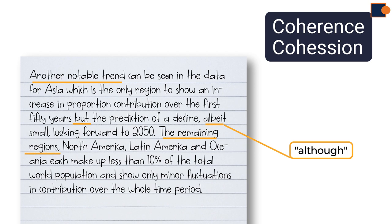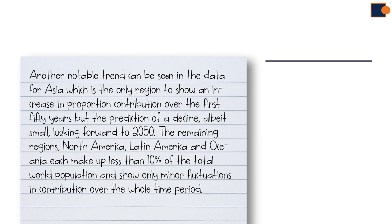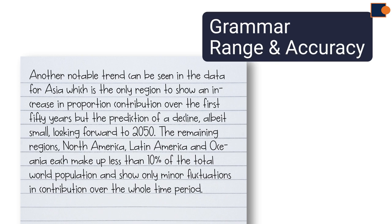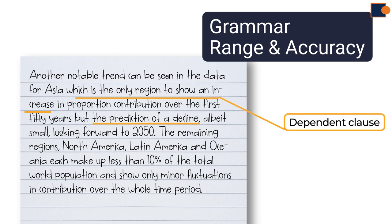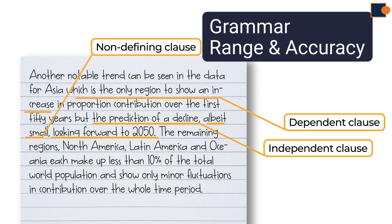In terms of grammar range and accuracy, there are a number of complex and compound sentences. First idea contained complex sentence, as which is the only region to show an increase? Dependent clause. Prediction of a decline looking forward to 2050. Independent clause.